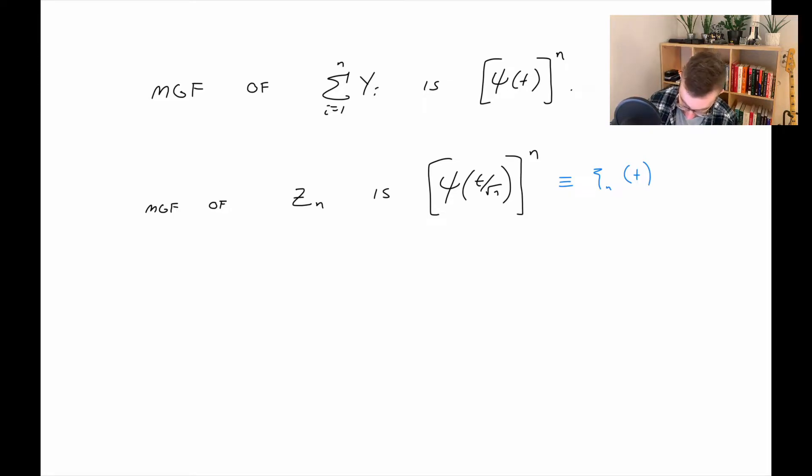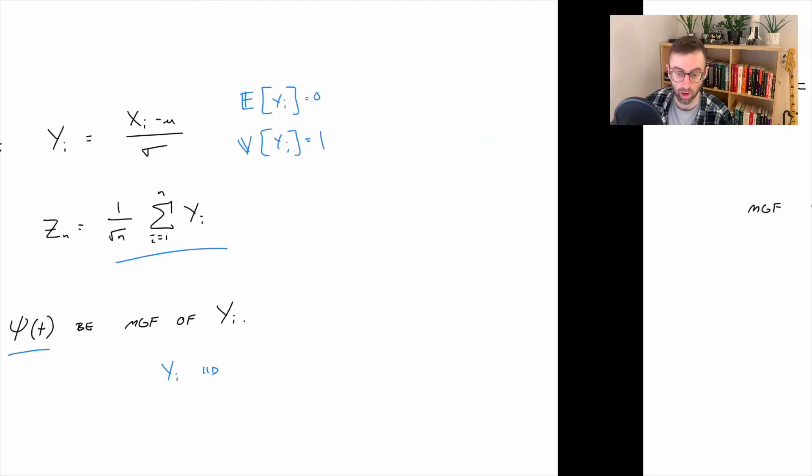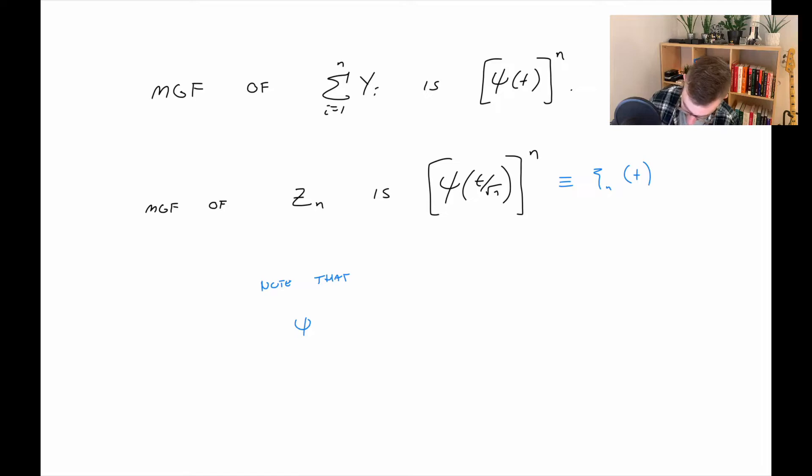A quick note here. Thinking back to the moment generating function of the yi's, if we take a derivative and plug in zero, that'll get us the expected value of y sub i, which is zero. And if we take two derivatives and plug in zero, that gets us the expected value of yi squared. But because their means are zero, that's actually the variance of y sub i, which is one. That'll come in handy.